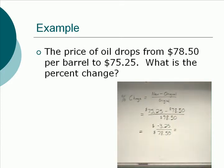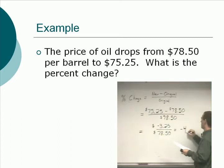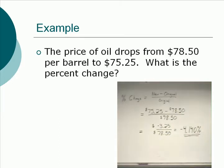What sign is this percentage value going to have — positive or negative? It's going to be negative, because the top turns out to be negative. Why? Because the new value is smaller than the original value, meaning this value decreased. A decreasing value will always result in a negative percent change, so the sign on percent change indicates whether the value increased or decreased. We have negative 3.25 divided by 78.50, keeping four sig digs, which gives us negative 4.140%. So we had a negative 4.140% change — it went down 4.140%.